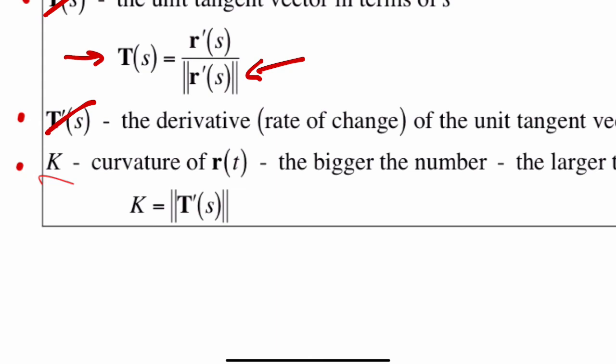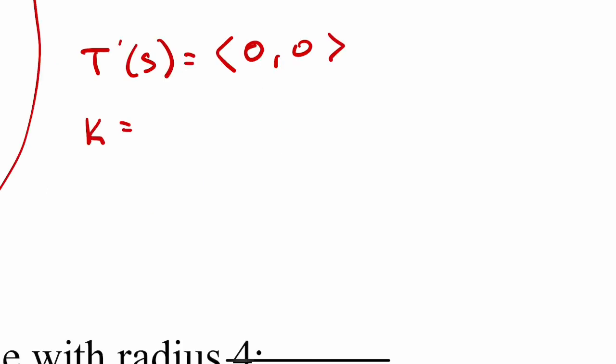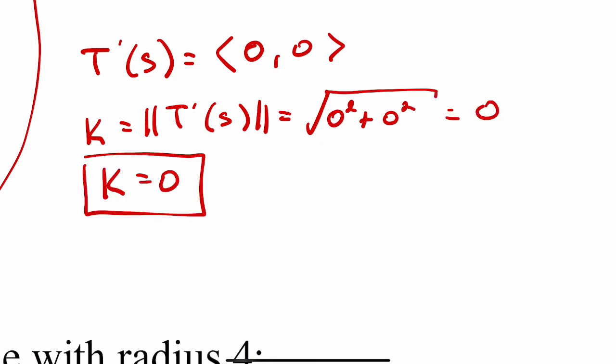So K is equal to magnitude of T'(s). So that's going to be the square root of 0 squared plus 0 squared equals 0.